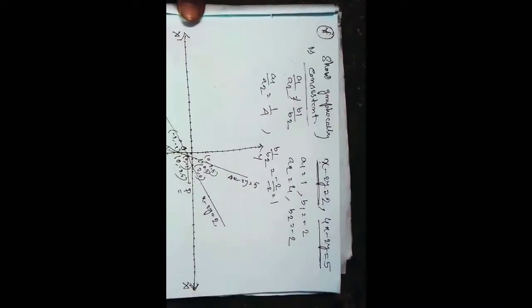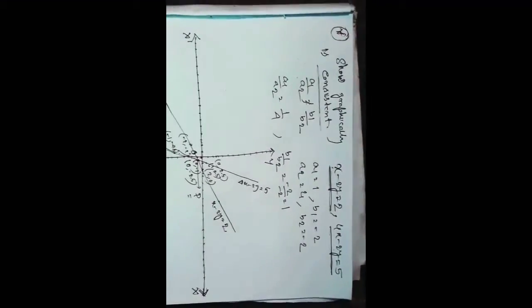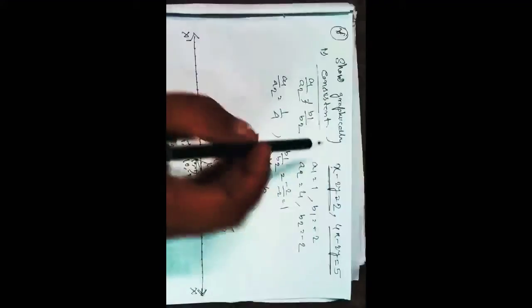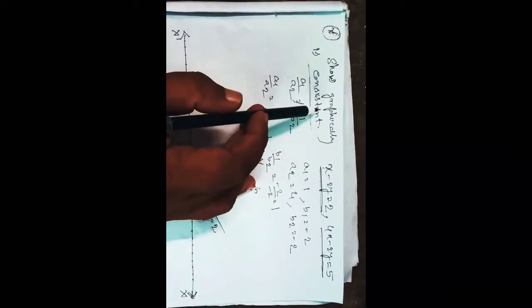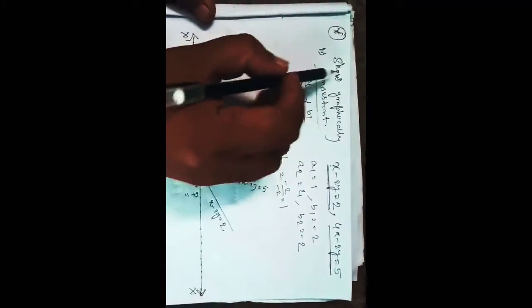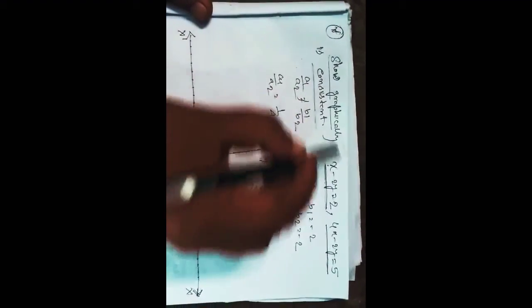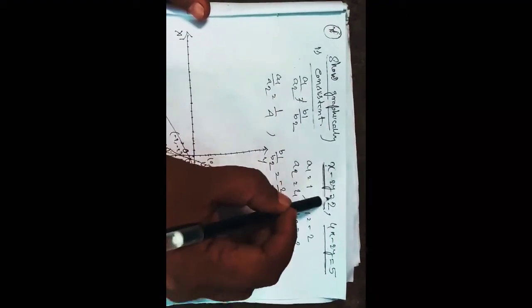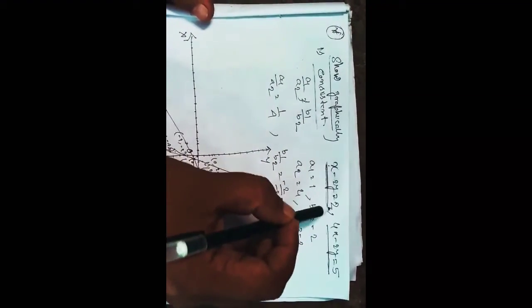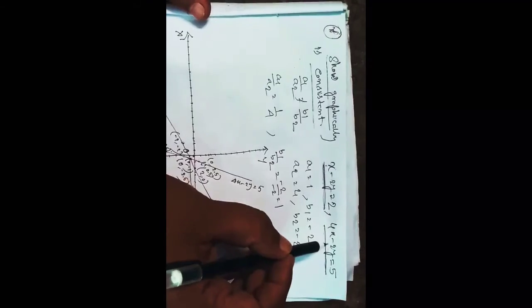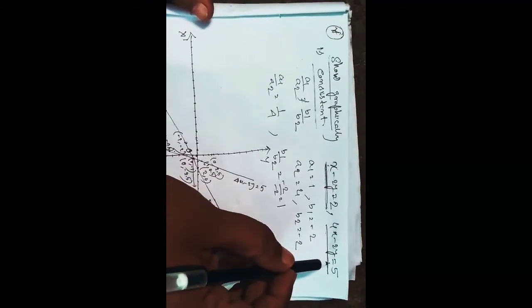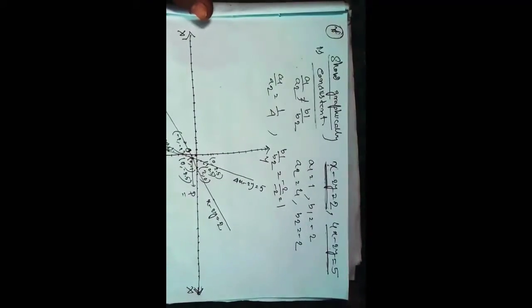Hello everyone. As you can see from the paper, we have to show graphically that x minus 2y is equal to 2 and 4x minus 2y is equal to 5 are consistent.